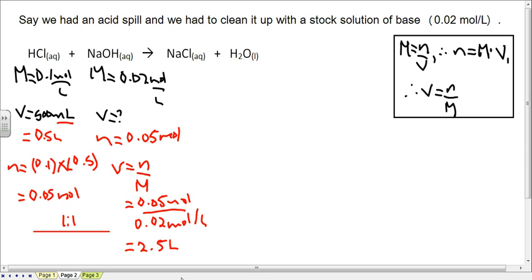So, it would take 2.5 liters to fully neutralize this solution. And so, we would be pretty confident that if we had any acid or base left over after pouring 2.5 liters on the spill, it would be pretty weakly concentrated.